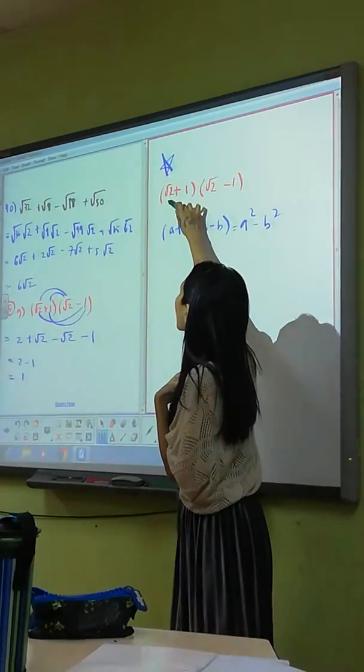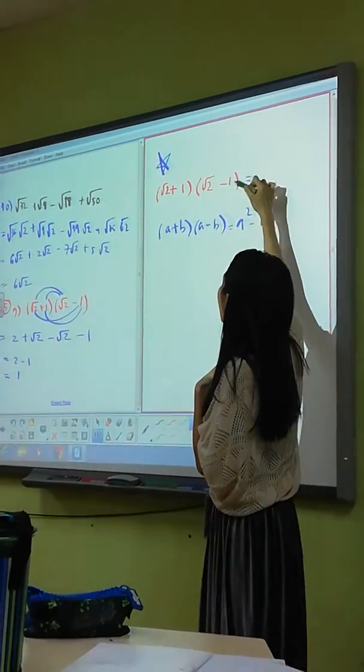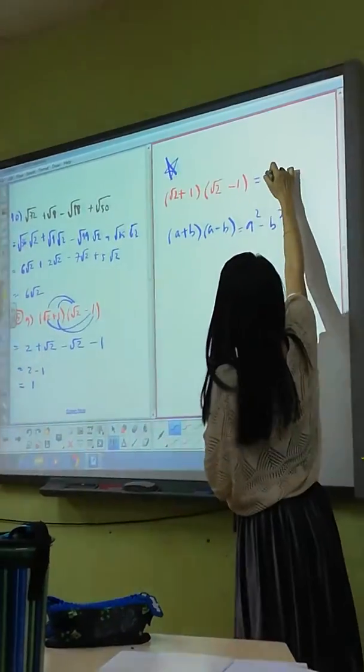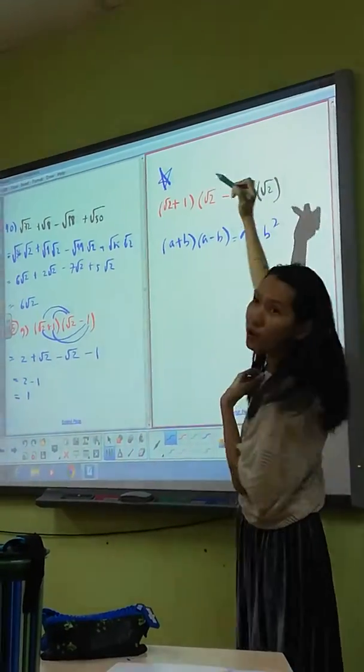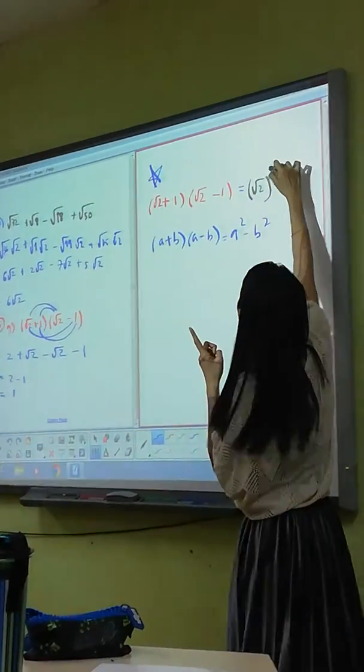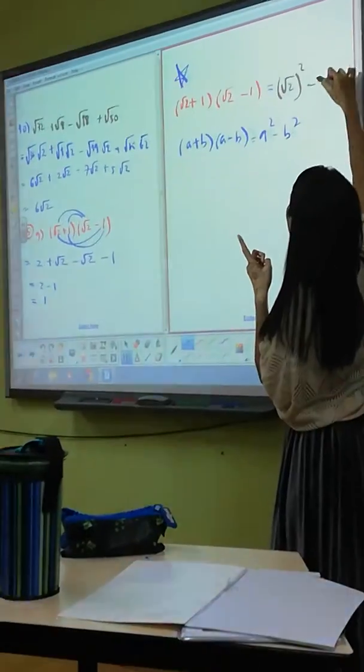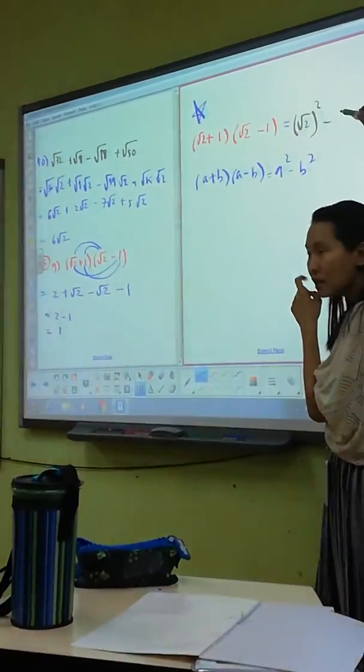So now, who is your A here? Square of two. So this is actually... Focus. Square of two minus, who is my B? One.